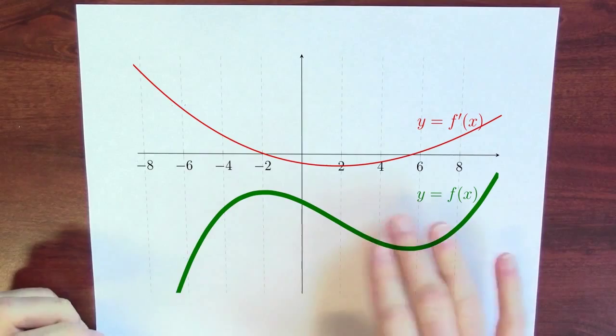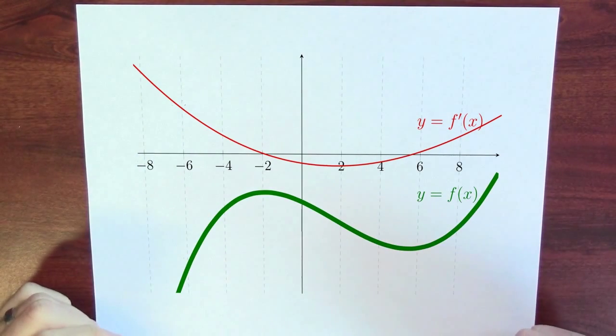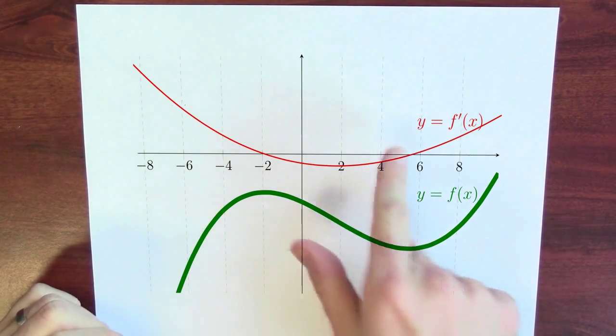Let's take a look at just the sign, the sign of the derivative. The thick green line is the plot of some random function, and the thin red line is its derivative.